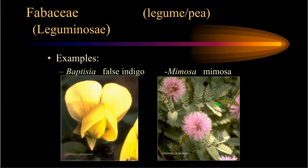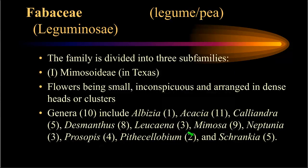Examples include Baptisia, the false indigo, which has the keel in the middle, wings, and banner with visible calyx parts below. But in the picture on the right showing Mimosa genus, there is none of that — only numerous stamens sticking out. In the Mimosa genus, the color of the stamen filaments is what makes the attractive part of the plant, not the corolla as seen in the pea plant. There is lots of variability in the legume family.